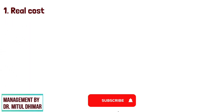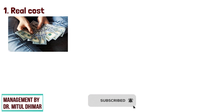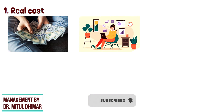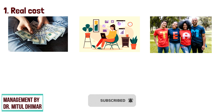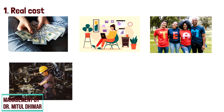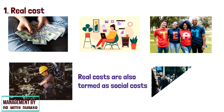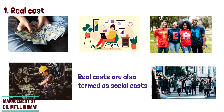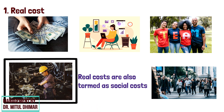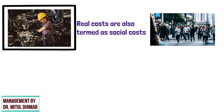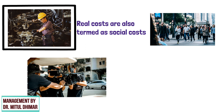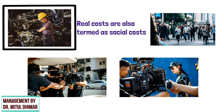Number 1: Real Cost. It refers to the payment made to compensate for all those efforts and sacrifices undergone by various members in production of a commodity. Real costs are also termed as social cost because the society faces a number of difficulties during the production process. For example, real costs are the exertion of all the different types of labor that are directly or indirectly involved in making of a movie.